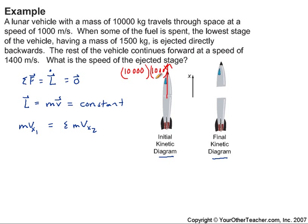So momentum is going to be the quantity 10,000 times 1,000. In our second kinetic diagram, after the second stage is split off, the initial stage is moving forward at 1,400 meters per second. And of course, it's going to weigh 8,500 kilograms. So we're going to have a mass of 8,500, and we're going to be multiplying that by 1,400. And then the other stage, the stage that was ejected, has a mass of 1,500. And it's moving backwards at some unknown speed, so let's just give that a variable and call it V2.